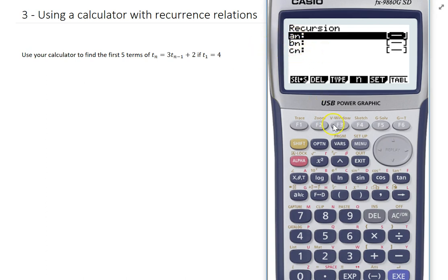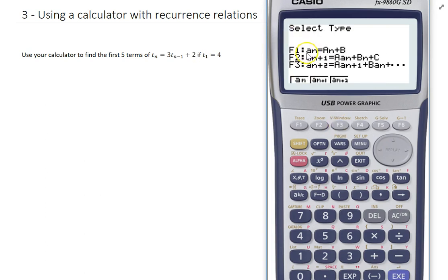But they've got different types of recursion. I'll show you what I mean. They have a formula where A subscript n equals A n plus B. They have one where A n+1 equals A n plus B n plus C. And then they have another one, A n+1 equals such and such and such.